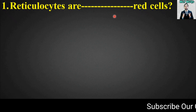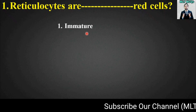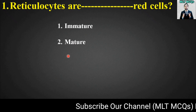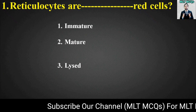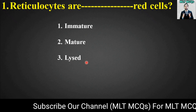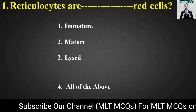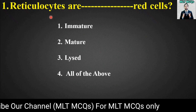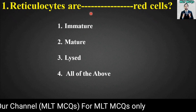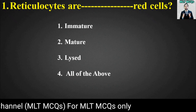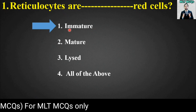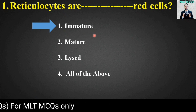MCQ number one: Reticulocytes are blank red cells. Options are: immature, mature, lysed, or all of the above. The right answer for this MCQ is option number one — reticulocytes are immature red cells.